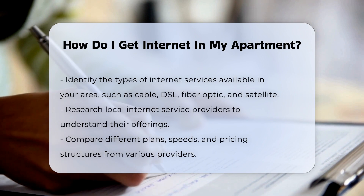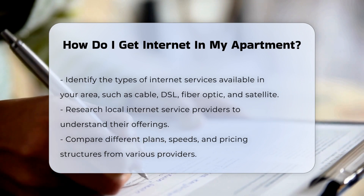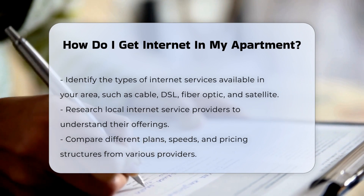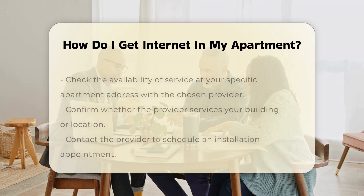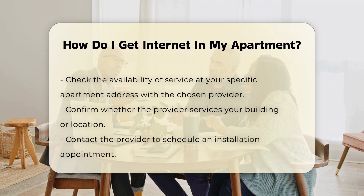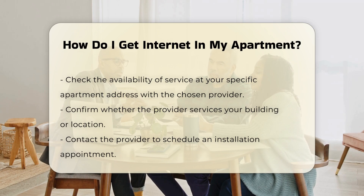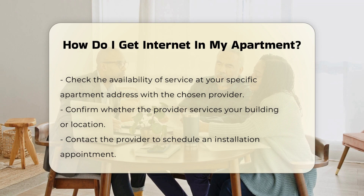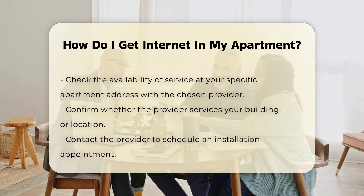Next, research local internet service providers. Each provider may offer different plans, speeds, and pricing structures. It is essential to compare these options to find the best fit for your needs. Once you have selected a provider, check the availability of service at your specific apartment address. Some providers may not service certain buildings or locations.